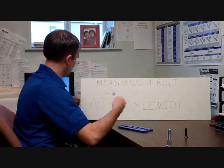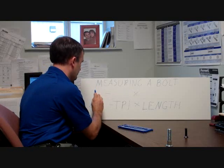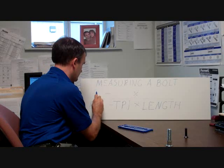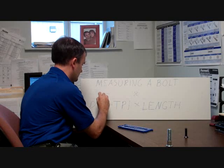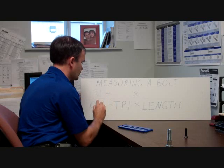So 3/4 is the diameter of our bolt. So we'll write this in. We have a bolt that is 3/4 of an inch in diameter.